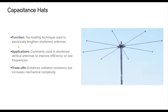Capacitance hats are top-loading structures used to electrically lengthen shortened antennas, improving their efficiency without requiring additional physical length. This technique is especially beneficial when vertical antennas operate on low frequencies where achieving full-size dimensions is impractical. Capacitance hats increase radiation resistance and reduce ground losses, though they also add mechanical complexity and wind loading. Proper design balances these factors for optimal performance.